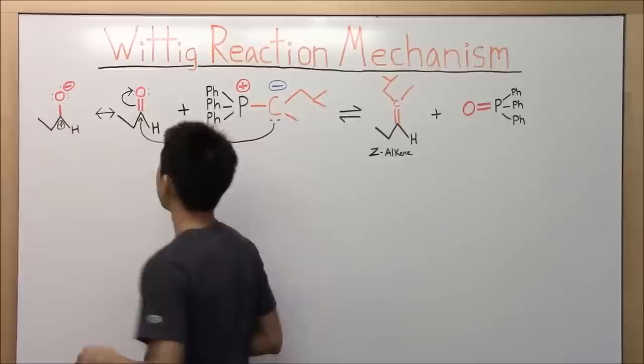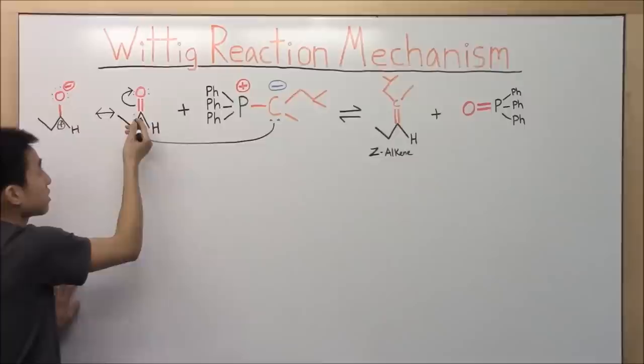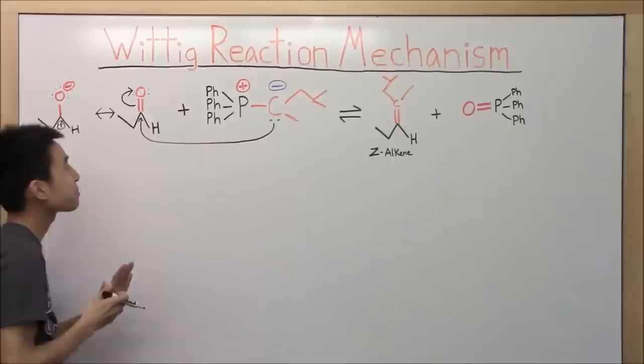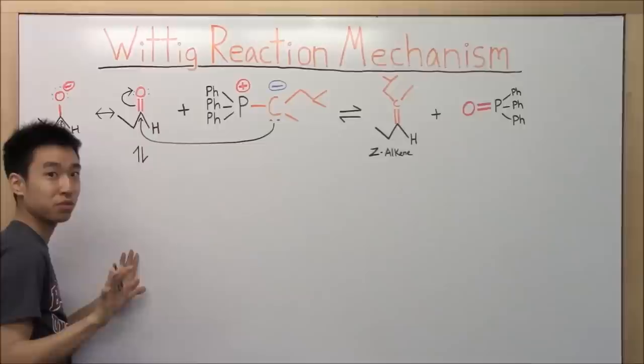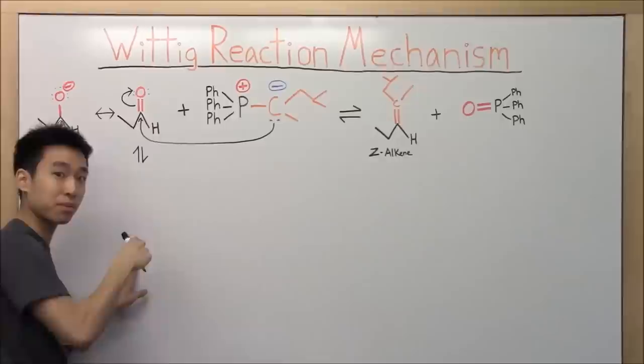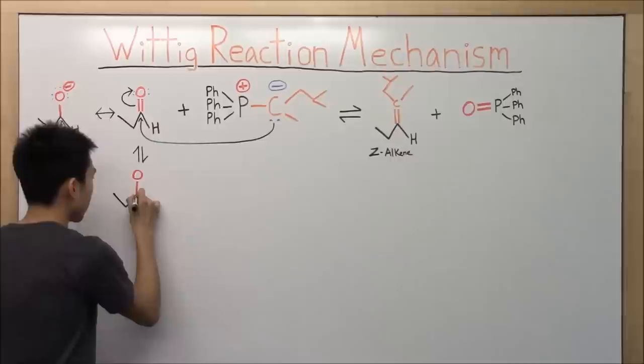So yeah. The electrons of your ilid attacks the electron-deficient carbon over here. And then this kicks up the electrons in the double bond of your carbonyl, because carbon only likes to have four bonds. He has that right now, but he's getting a fifth bond from the attack. And let's draw what we get from here. Okay? So I want you guys to do it out with me. Hit pause if I'm going too fast. I want you guys to draw it out first and check if you have the same products that I get.